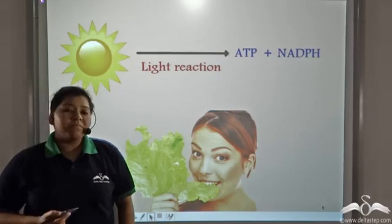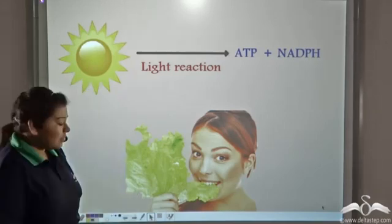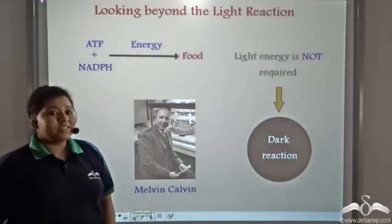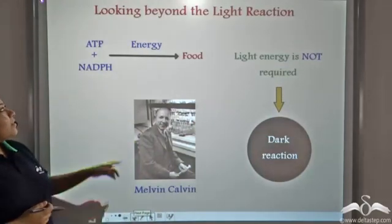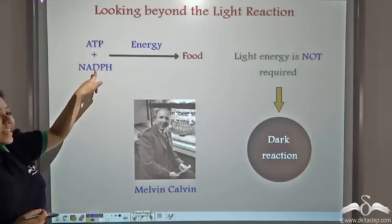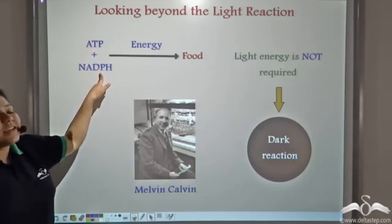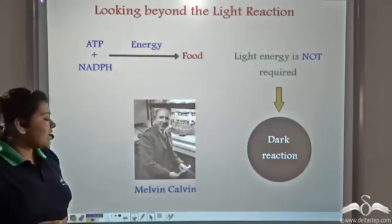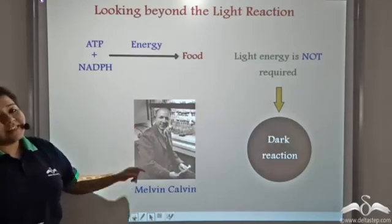So when does food get manufactured? Let us see beyond the light reaction. The energy stored in ATP and NADPH is utilized to manufacture food, and this was proposed by scientist Melvin Calvin.